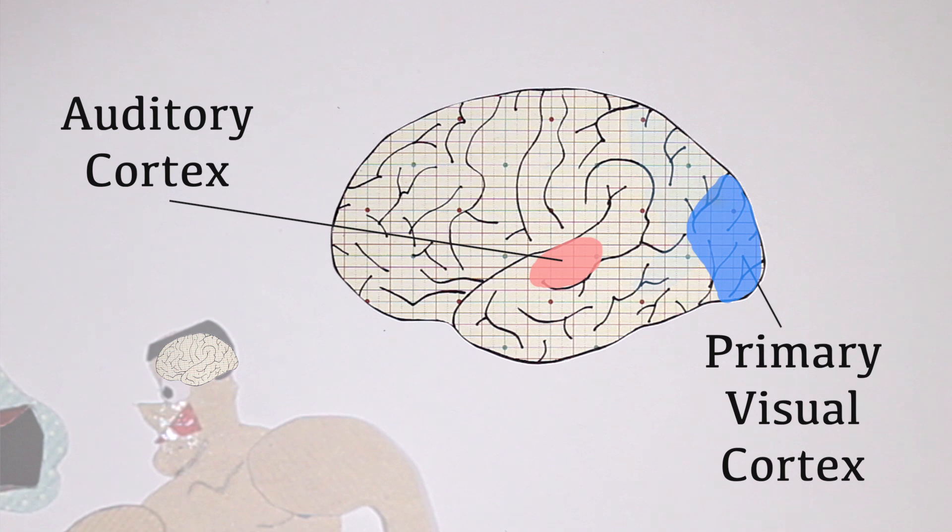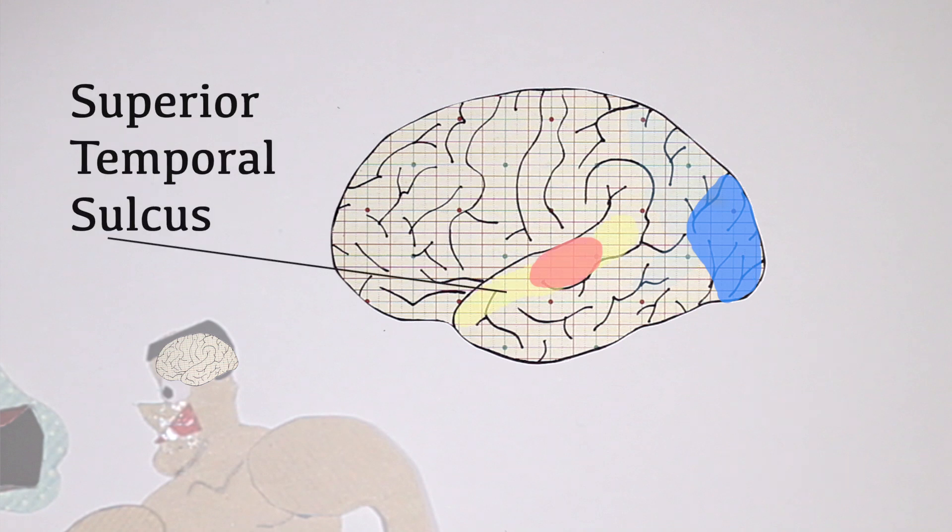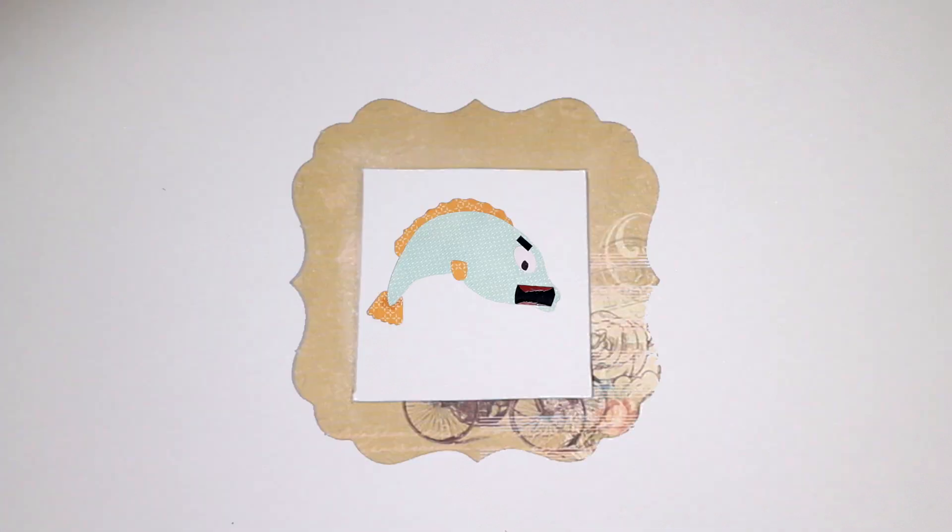Another brain region that's also really active is your superior temporal sulcus, also known as the STS, that's involved in the perception of biological motion. If you saw a photo of a sea bass, it's how you perceive the bass is swimming and how you know what direction it's moving in.